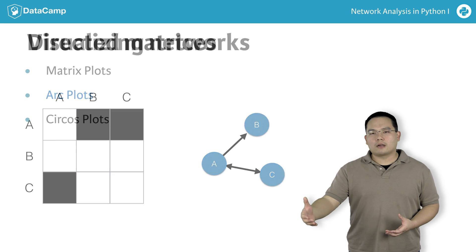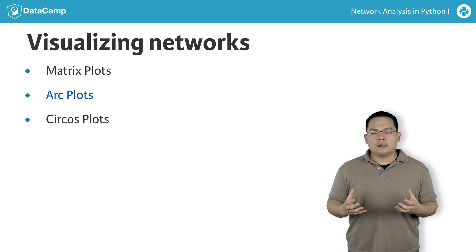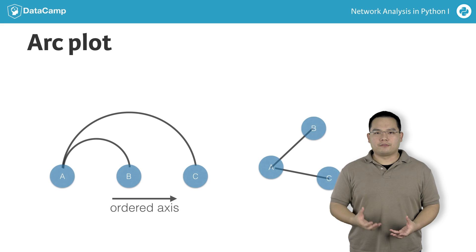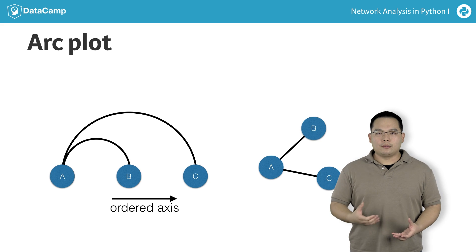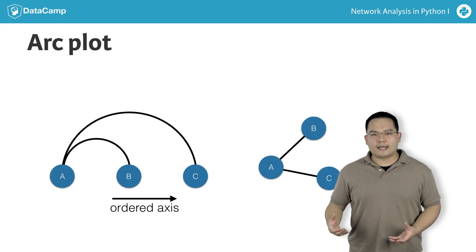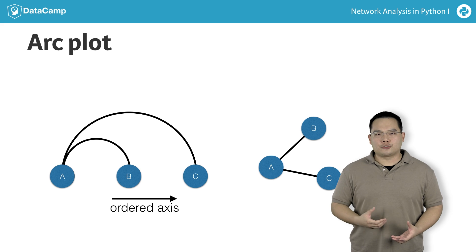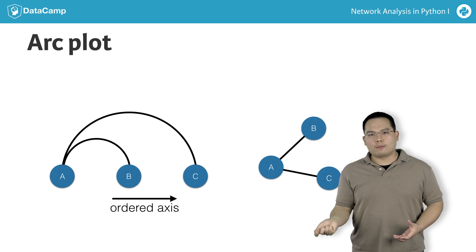Let's now move on to arc plots. An arc plot is a transformation of the node link diagram layout in which nodes are ordered along one axis of the plot and edges are drawn using circular arcs from one node to another.